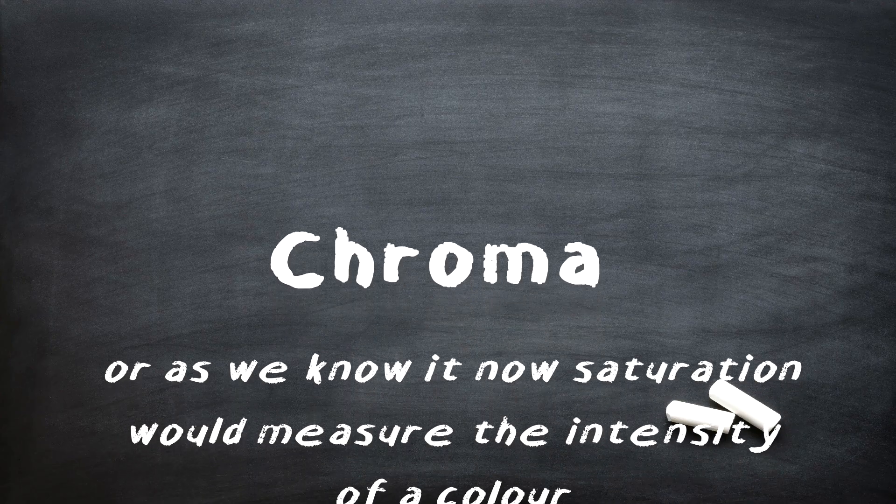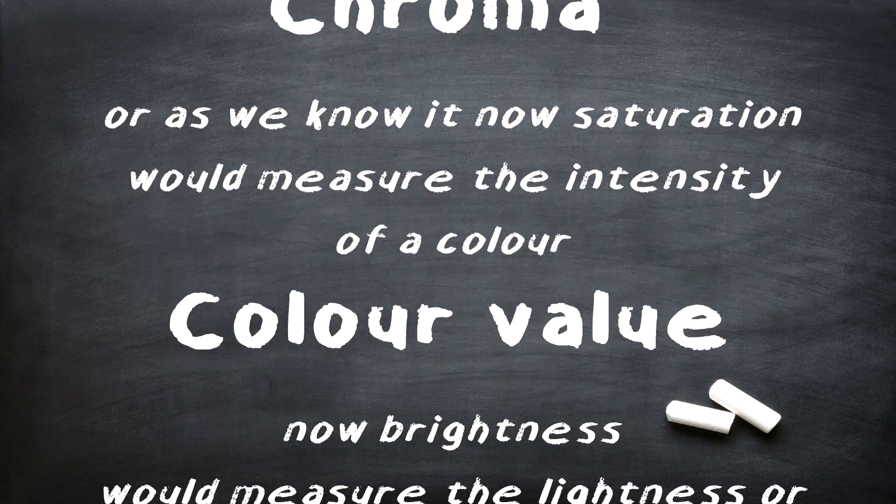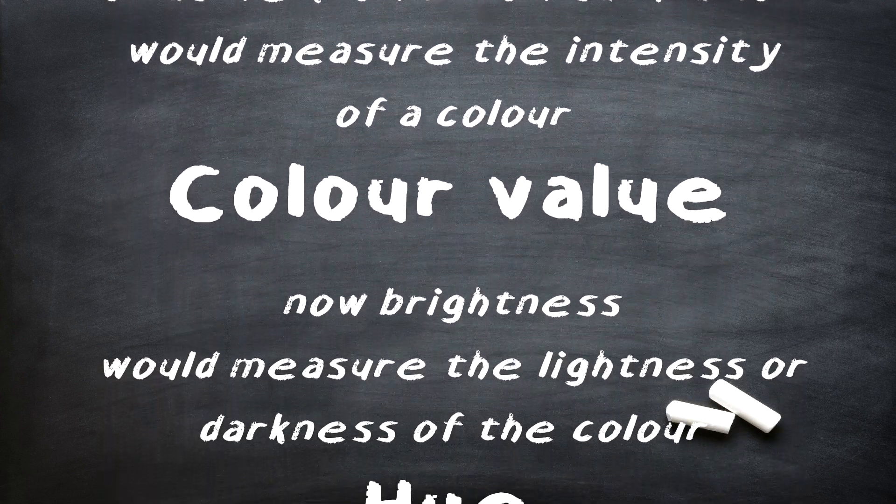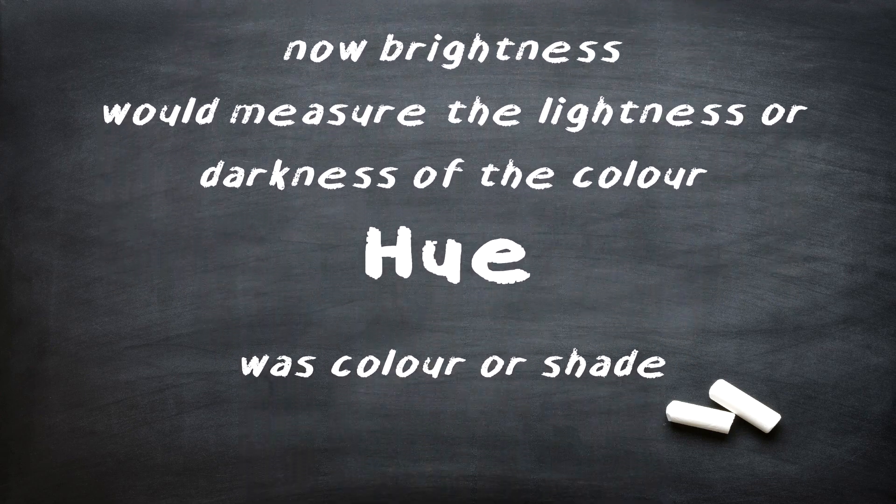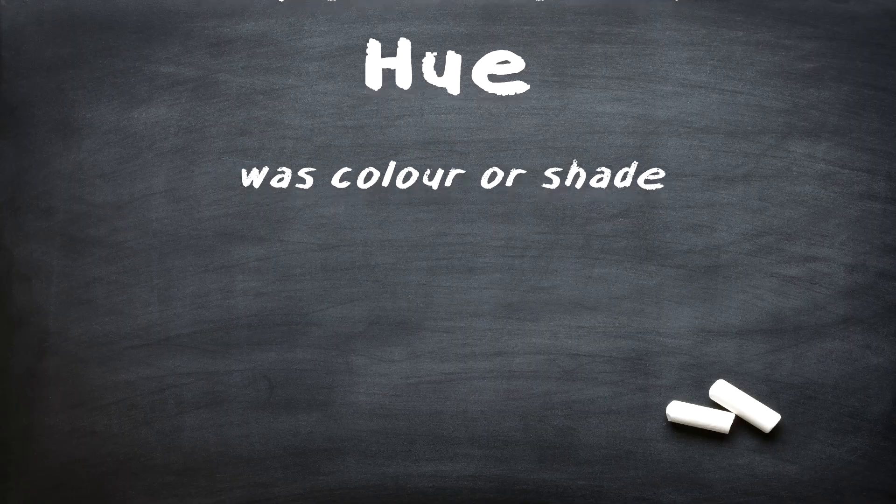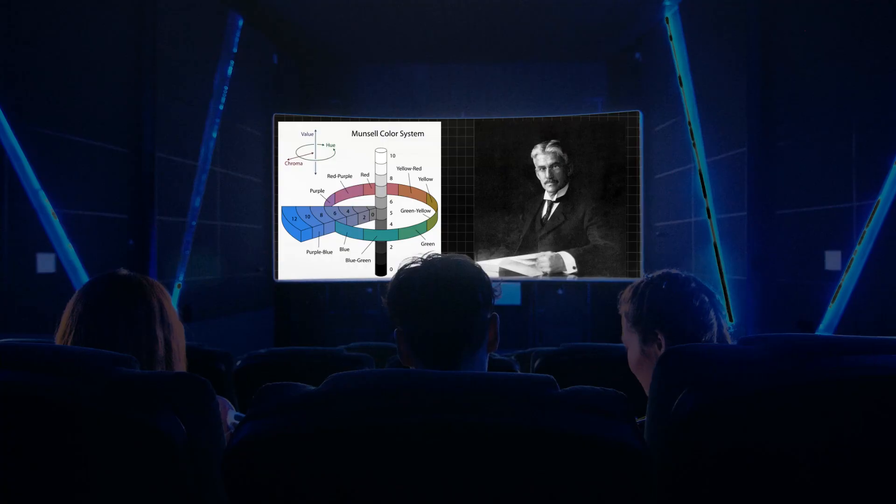Here come in the concepts of chroma and color value as additions to hue. Chroma, or as we know it now, saturation, would measure the intensity of color. Color value, now brightness, would measure the lightness or darkness of the color. Hue was color or shade by the way. With these additions, Munsell would create a 3D color space. That's right, the color wheels are 3D now.